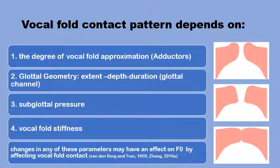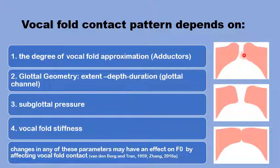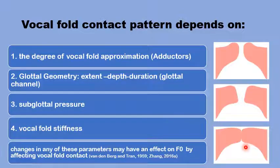So, what are the factors that this vocal fold contact pattern depends on? Primarily, the degree of the vocal fold approximation by the adductors, the glottal channel geometry — its extent, its depth — and the duration of the contact, the subglottic pressure, and the vocal folds intrinsic stiffness during adduction.